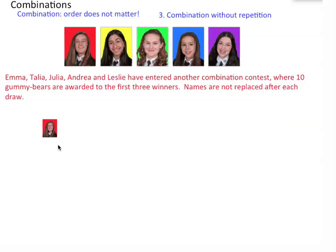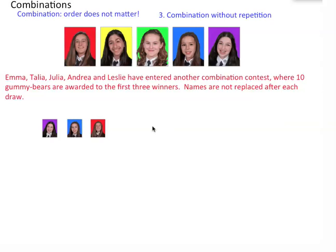For the first person, we could pick any one of these people — we have five different choices. For the second person, let's say we pick Leslie in the first place, we can't pick her in the second place, so we have four outcomes only. For the third person, if we picked Leslie first and Andrea second, then we can't pick them again — so in the final place, because it's without replacement, we have three choices. So we have five times four times three — but that's if we were doing a permutation.